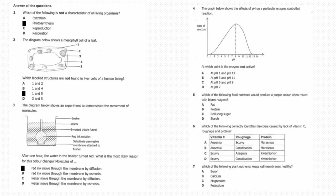Question number four: The graph below shows the effect of pH on a particular enzyme-controlled reaction. At which point is the enzyme not active? The answer is A, at pH 1 and pH 13. Question five: Which of the following food nutrients would produce a purple color when mixed with biuret reagent? The answer is B, protein.